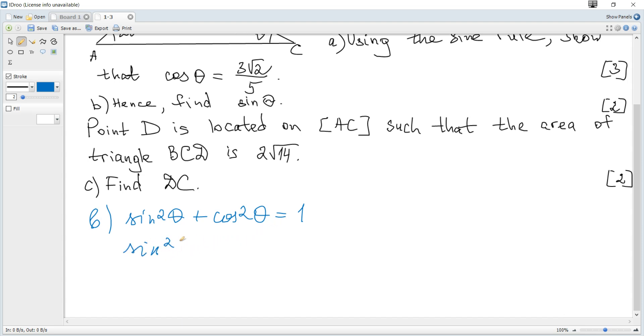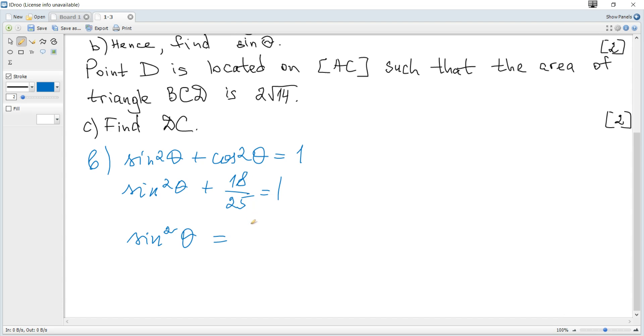Sine squared plus cosine squared—which is 9 times 2, that's 18 over 25—equals 1. Hence sine squared is 7 over 25, and sine of theta in general is plus or minus.